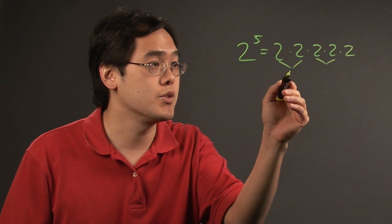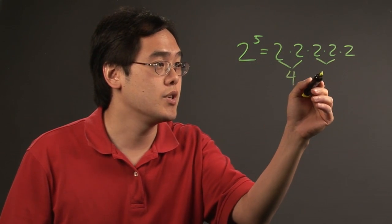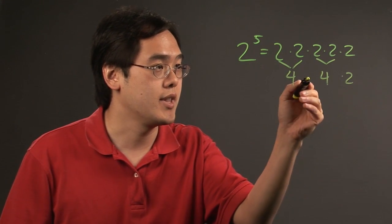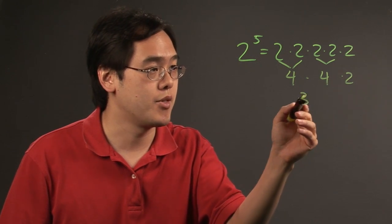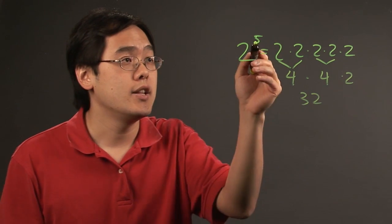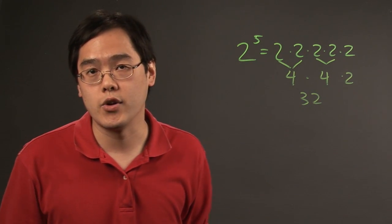For example, 2 times 2 is 4, 2 times 2 is another 4, and then you're carrying that 2. So, 4 times 4 is 16, times 2 is going to be 32, and 5 is not too high, but it's not very low either.